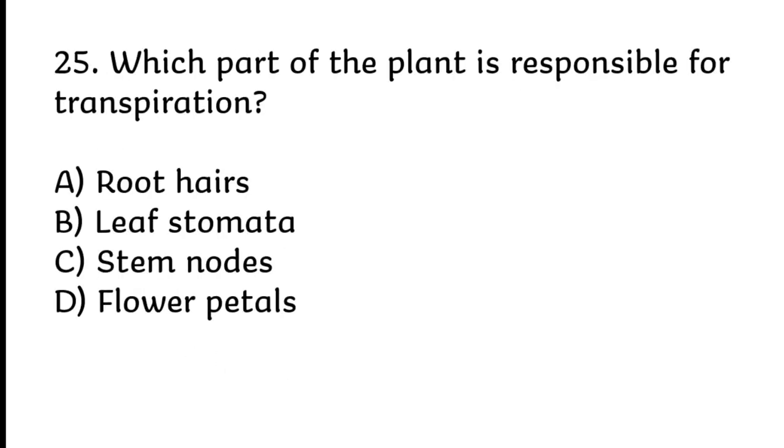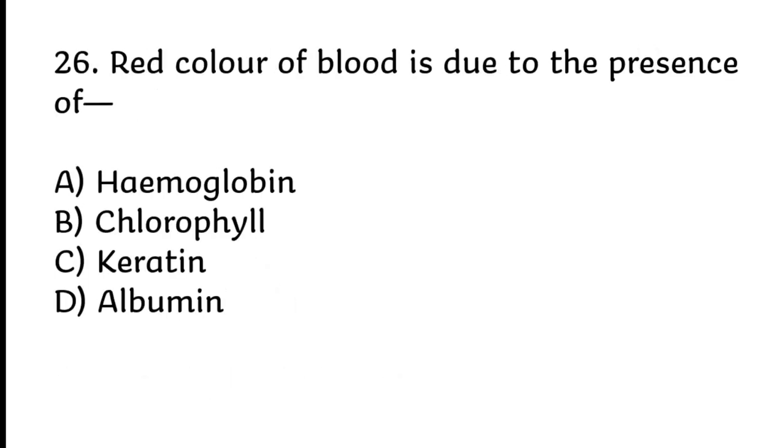Which part of the plant is responsible for transpiration? Correct answer is B, leaf stomata. Red color of blood is due to the presence of hemoglobin. Correct answer is A, hemoglobin.